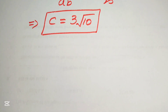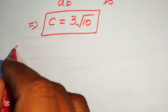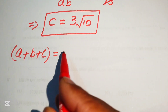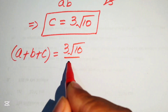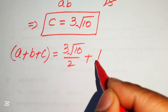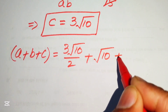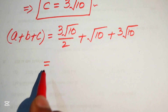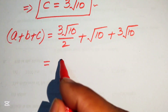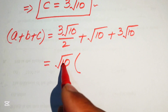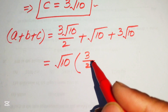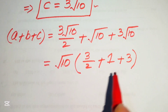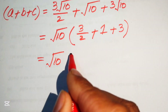We now have all values: a = 3√10/2, b = √10, c = 3√10. We write a + b + c = 3√10/2 + √10 + 3√10. Taking √10 as common factor, we get √10 × (3/2 + 1 + 3).